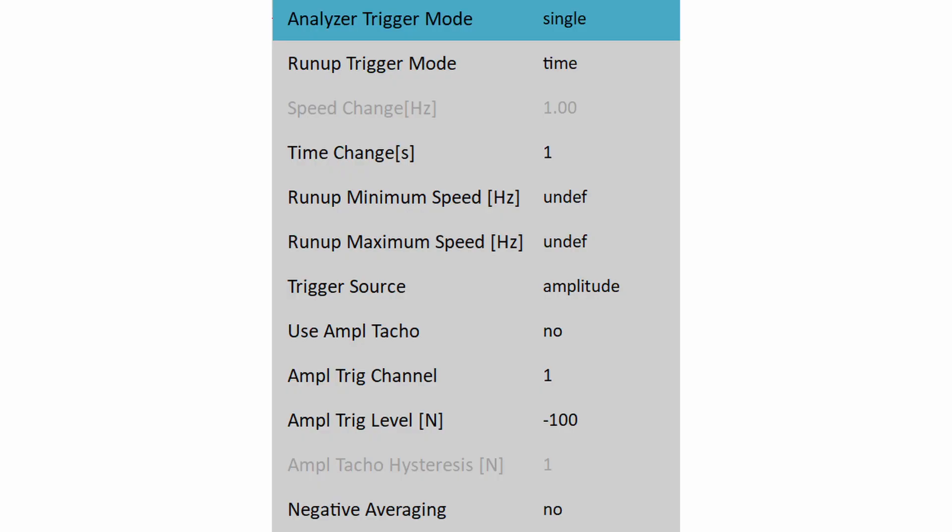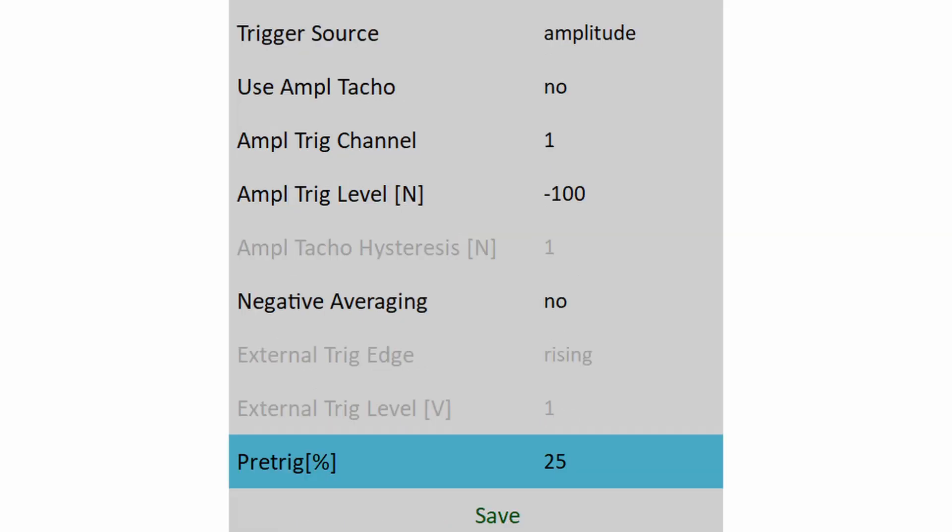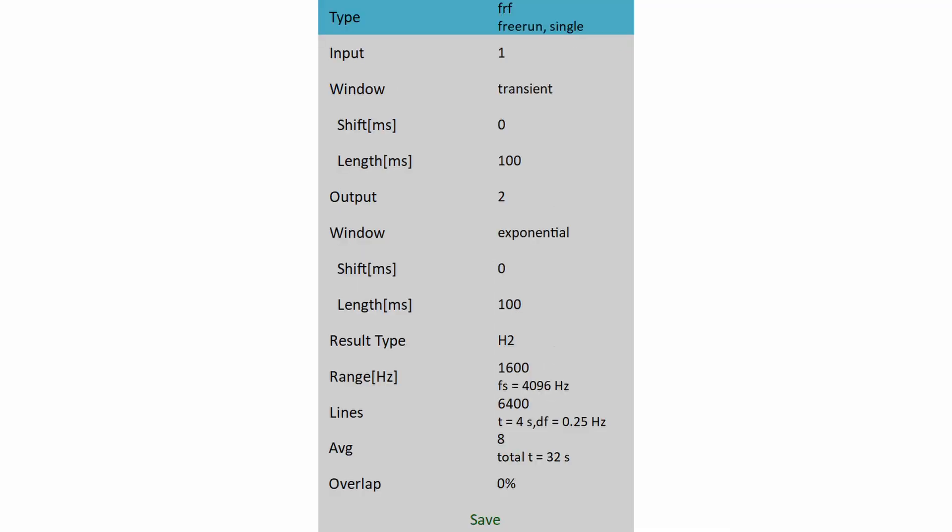I return to the trigger setting screen. I set the trigger level to minus 100 N. I also set the pre-trigger to 25%. Now we make the initial measurement with FRF function without the accurate setting of windows. We will set it later.